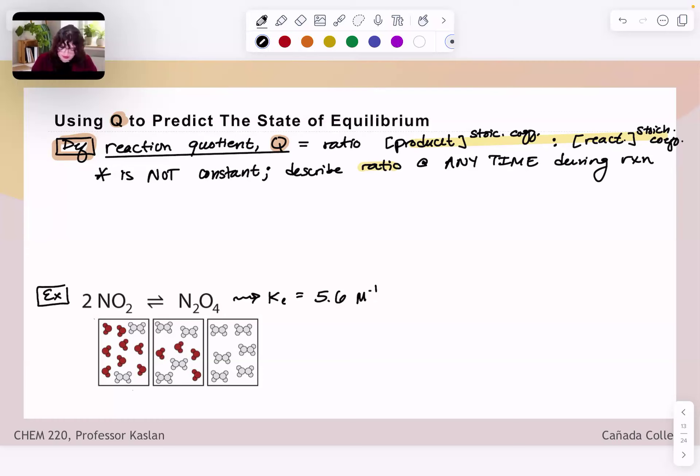So if we had our general reaction, aA reacts with bB to establish equilibrium to form cC and dD, then Q would be expressed very similarly to how we express our equilibrium constant. So it would still be a proportion of concentration C to the c times concentration D to the d over concentration A to the a times concentration B to the b.